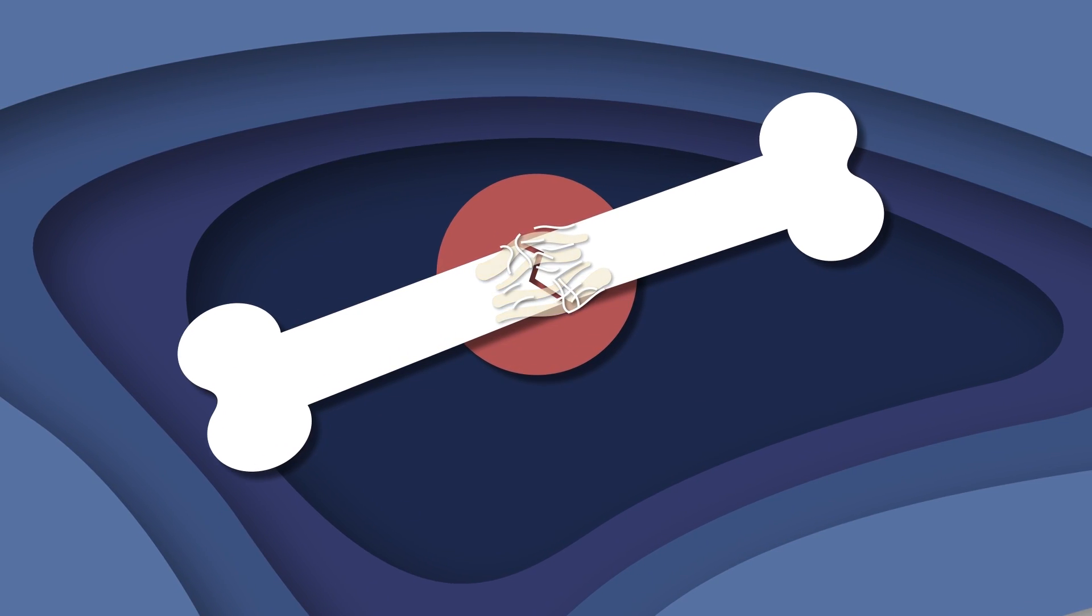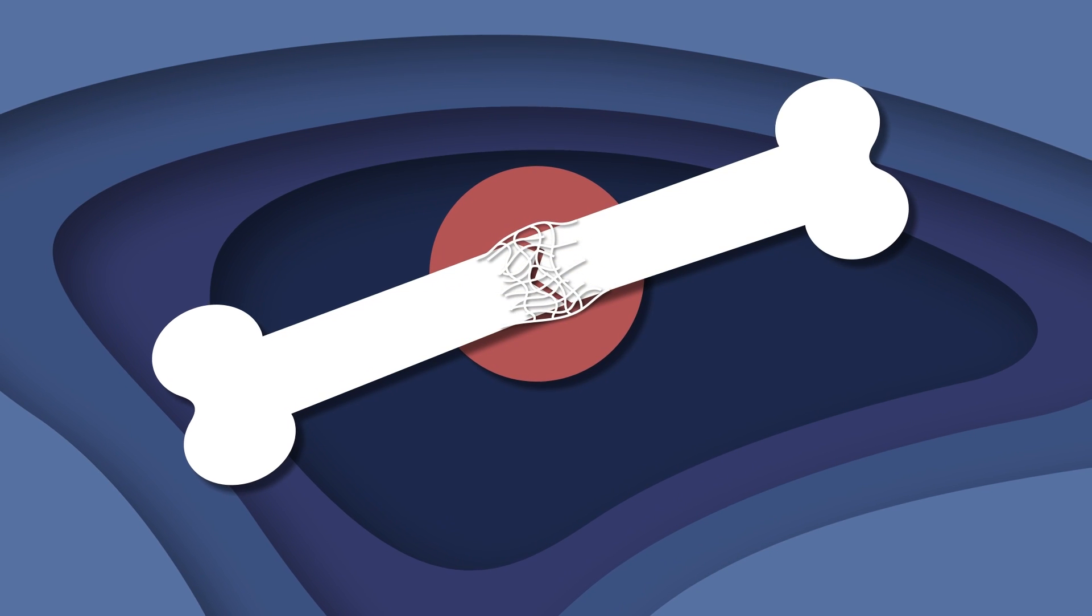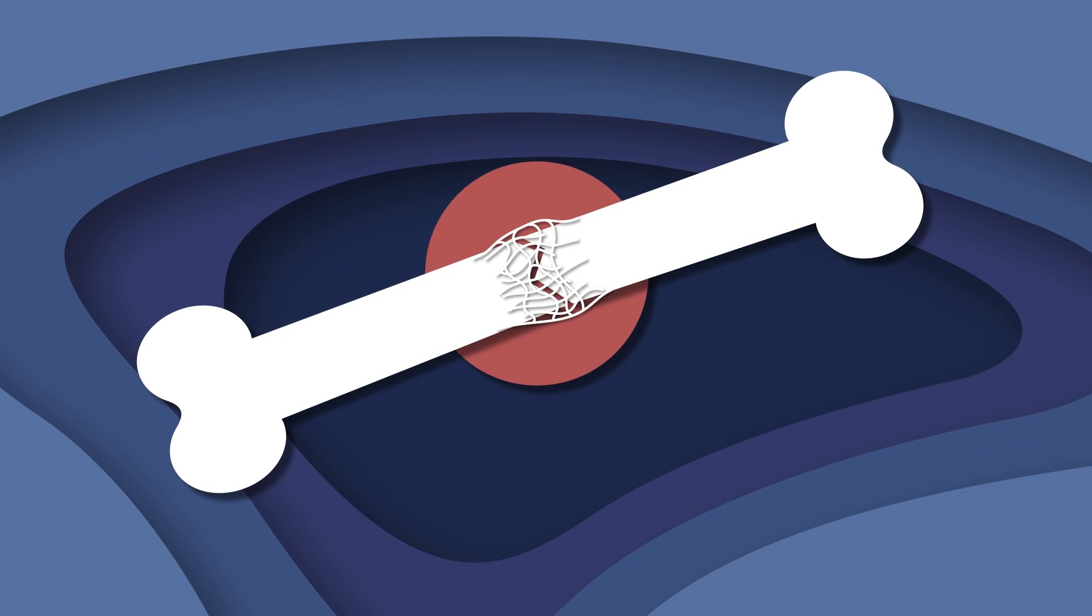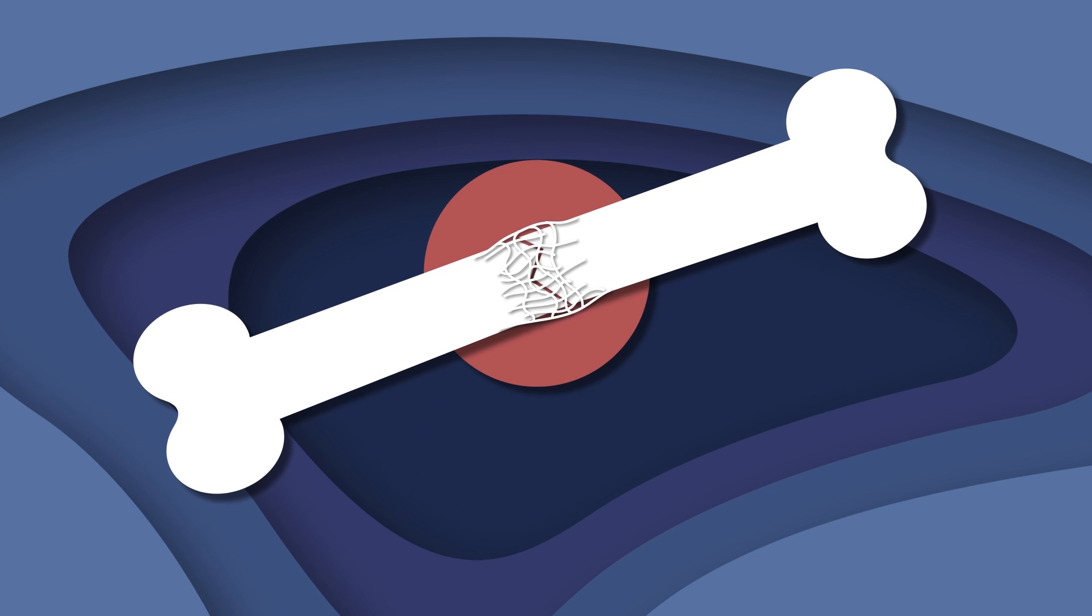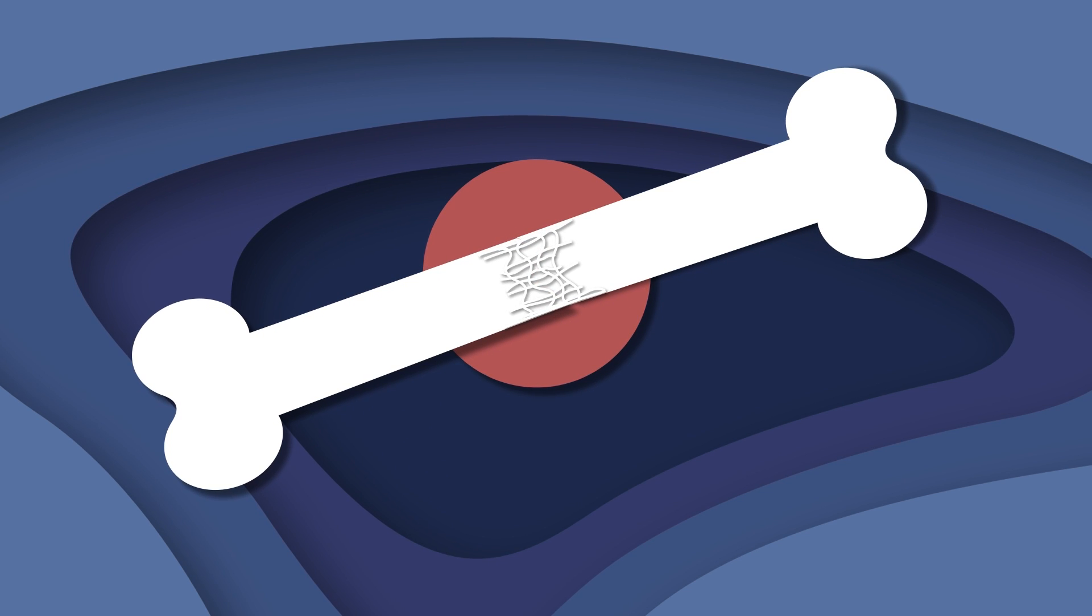Over the next few weeks, this soft callus turns hard. This hard callus is made of woven bone, acting like a guard. Next, regular bone takes place of this callus. Bit by bit it rebuilds. After six weeks it should